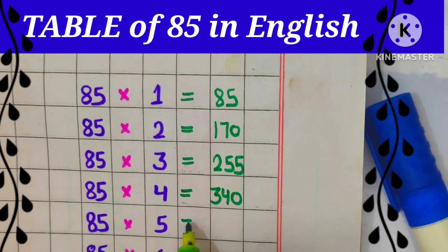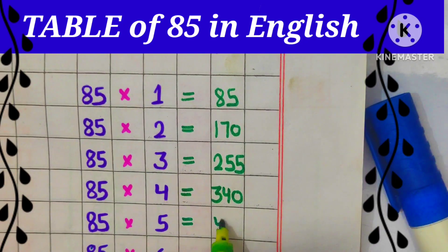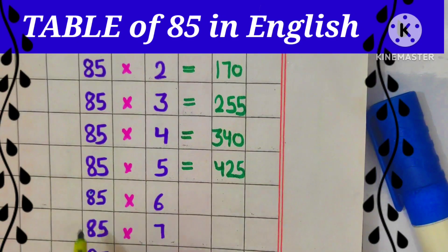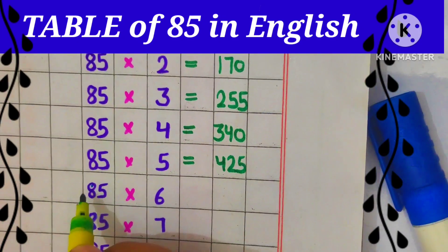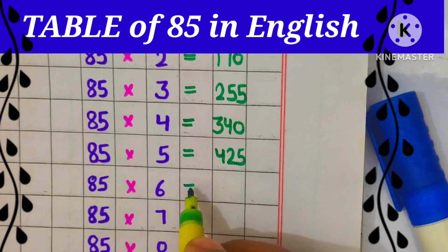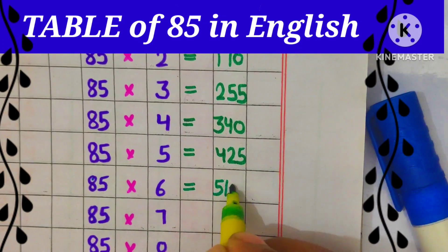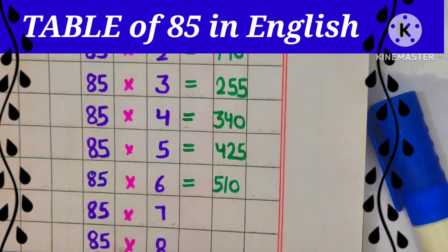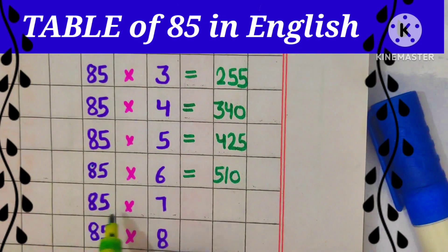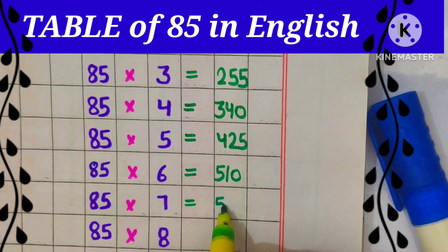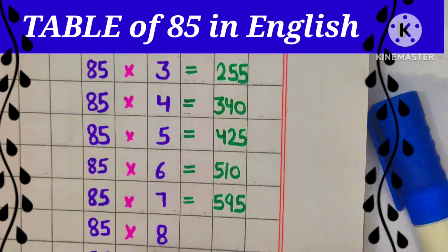85 5s are 425, 85 6s are 510, 85 7s are 595,